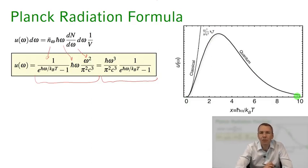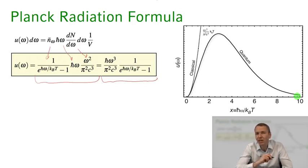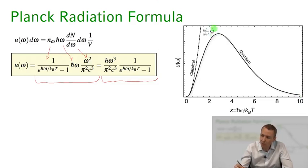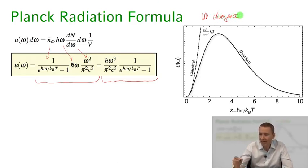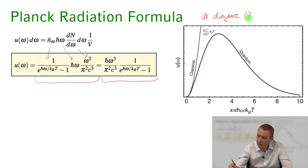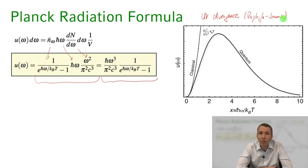This blackbody radiation formula perfectly matches what people had been measuring for blackbodies in thermal equilibrium. Classical physics, however, predicts k_B T per mode — the average thermal energy — giving an energy density proportional to ω²k_B T, which leads to the famous ultraviolet divergence. This so-called Rayleigh-Jeans result clearly disagreed with experiment and gave rise to the UV catastrophe. The key new feature in Planck's formula is the Bose-Einstein distribution for the average thermal photon number.